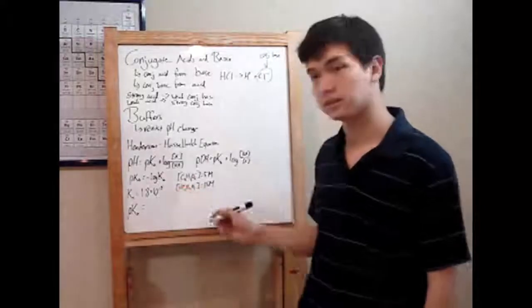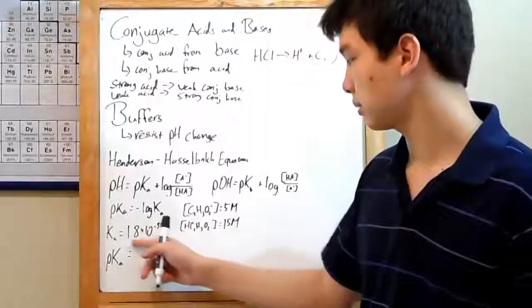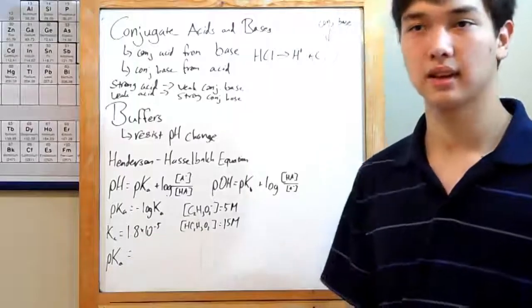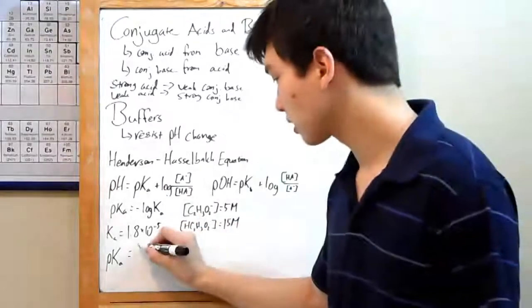So let's proceed using acetic acid as an example, or vinegar. The Ka for that is 1.8 times 10 to the negative fifth. Punching in negative log of that into your calculator will give you your pKa, 4.7.